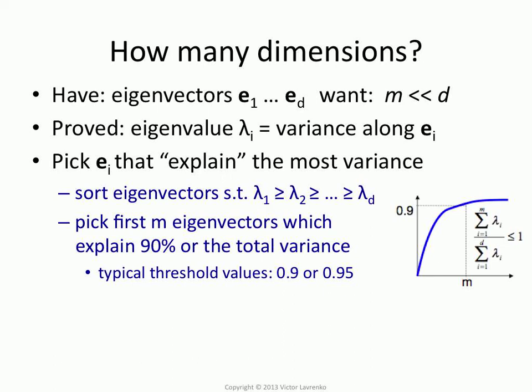We could do that just by looking at the eigenvalues. If we add up the first m eigenvalues and divide by the sum of all eigenvalues, all d of them, that will tell us what proportion of the variance we're capturing by taking the first m dimensions.